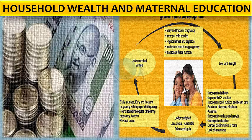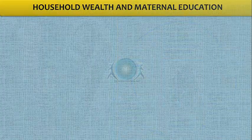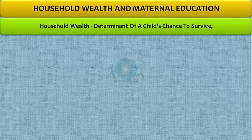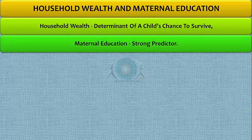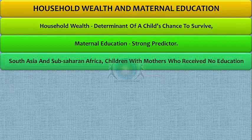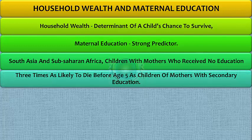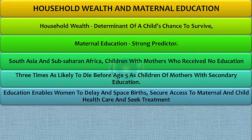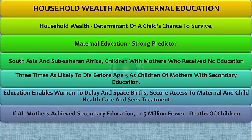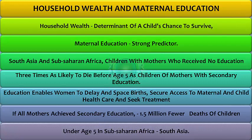The UN report also points to household wealth and maternal education as key factors. Household wealth is one determinant of a child's chance to survive, but maternal education is also a very strong predictor. Across much of South Asia and sub-Saharan Africa, children with mothers who received no education are almost three times as likely to die before age five as children of mothers with secondary education. Education enables women to delay and space births, access maternal and child health care, and seek treatment when children fall ill. If mothers achieved secondary education, an estimated 1.5 million fewer annual child deaths could occur in sub-Saharan Africa and 1.3 million fewer in South Asia.